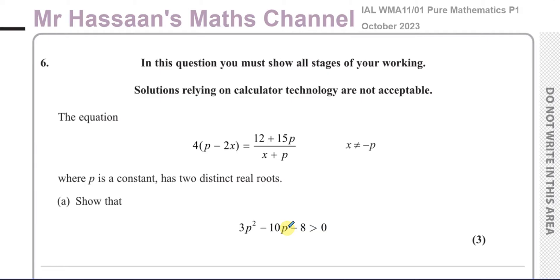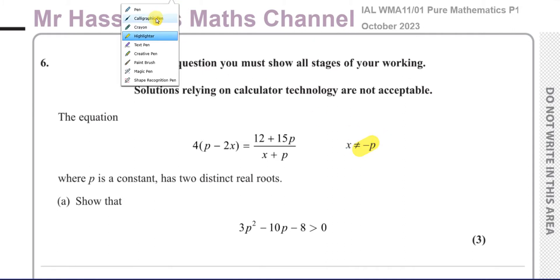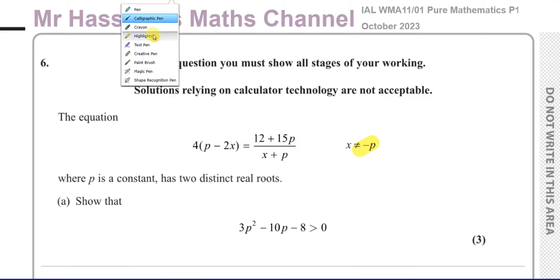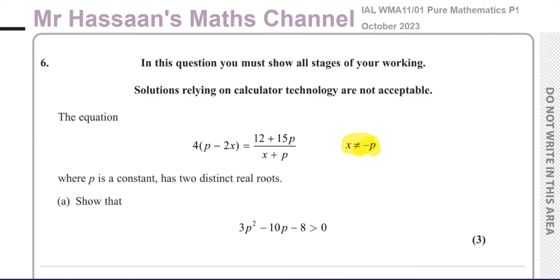The equation is: 4 times (p minus 2x) equals 12 plus 15p over (x plus p), where x cannot equal negative p. That constraint might come in useful later on — it's basically what causes the expression to be undefined, and we may end up with an answer that we have to reject, so keep that in mind.